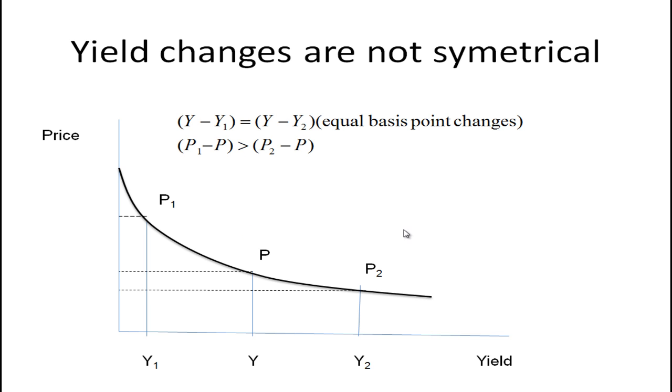That is, when interest rates fall, bond prices go up more than they go down when interest rates rise. And that's actually a good thing, because if interest rates rise, the value of your bonds goes down, but it won't go down as much as it will go up if interest rates fell by the same amount. So if you're a bond portfolio manager, ideally you'd like to produce a portfolio that has a lot of convexity.